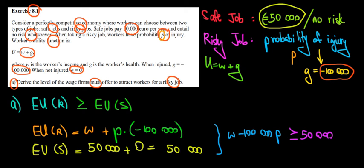Now if we take the minus 100,000 to the other side, we take this term to the other side because we're looking for the wage of the risky job. This is the wage belonging to the risky job. Then what would we get?